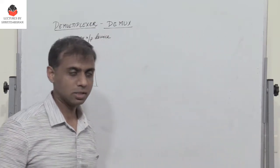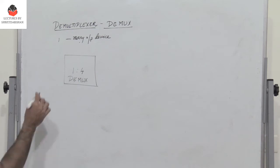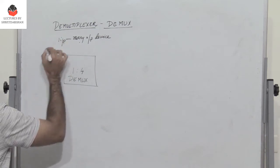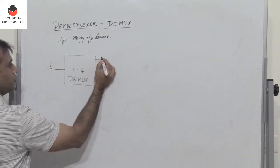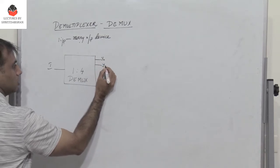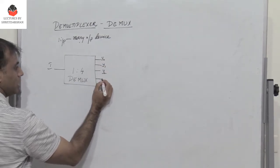As I have already mentioned, a demultiplexer is a one input, many output device. So here I need to design a 1 to 4 demultiplexer. So there is a single input i and there are 4 outputs y0, y1, y2 and y3.